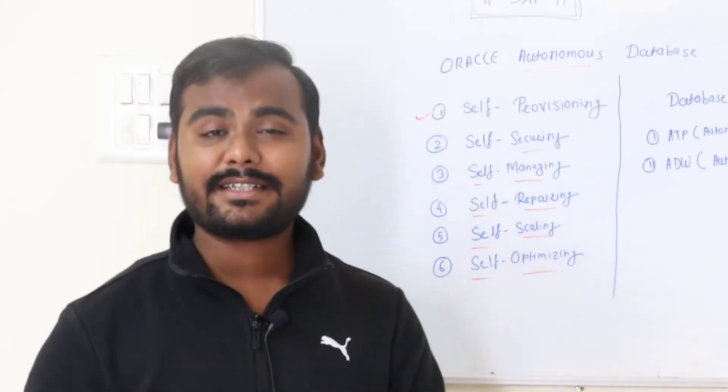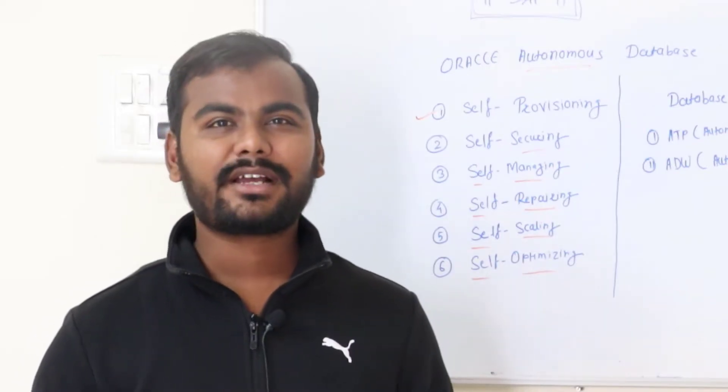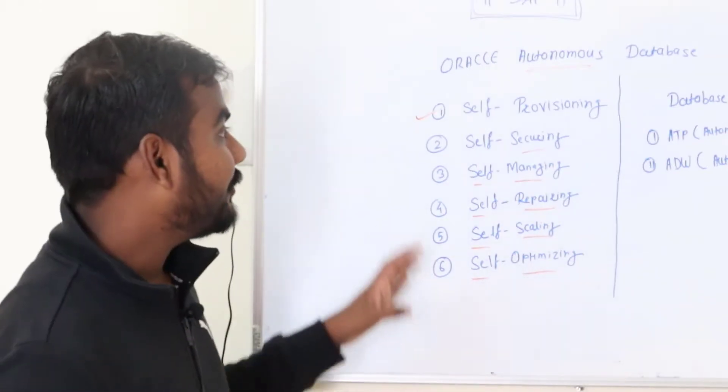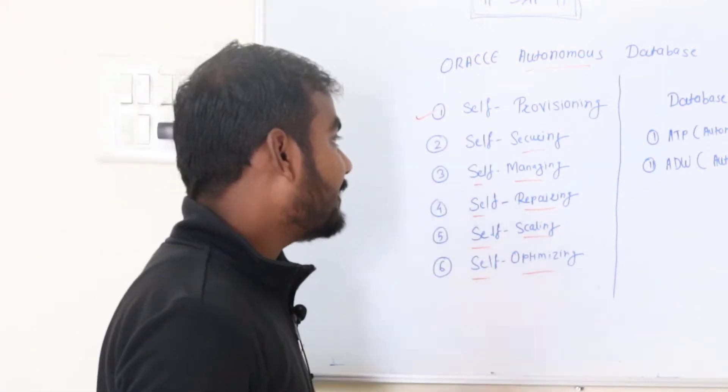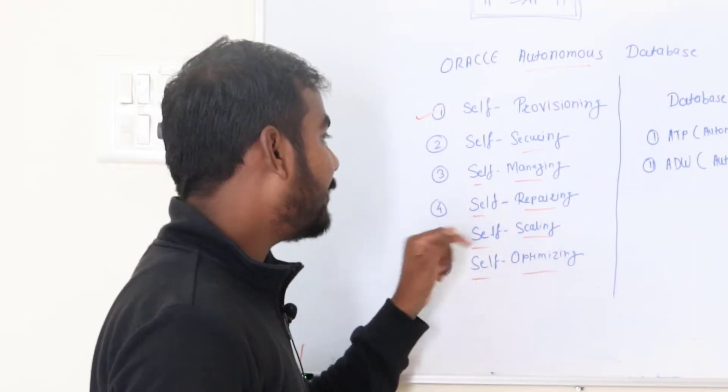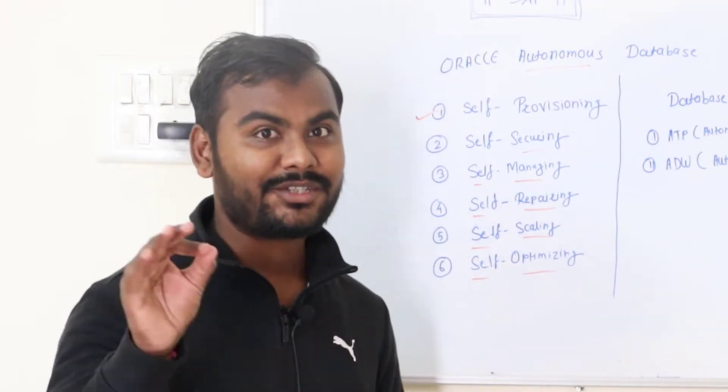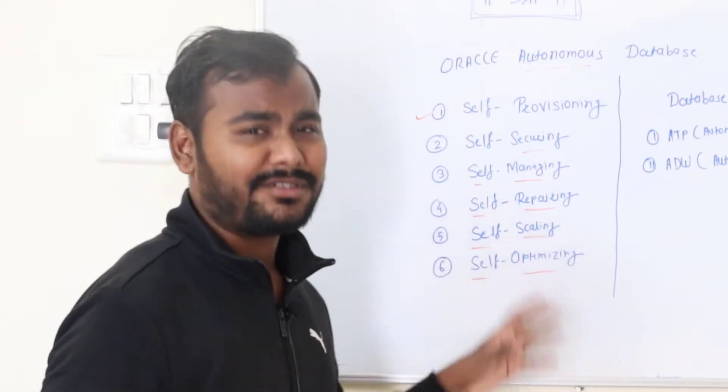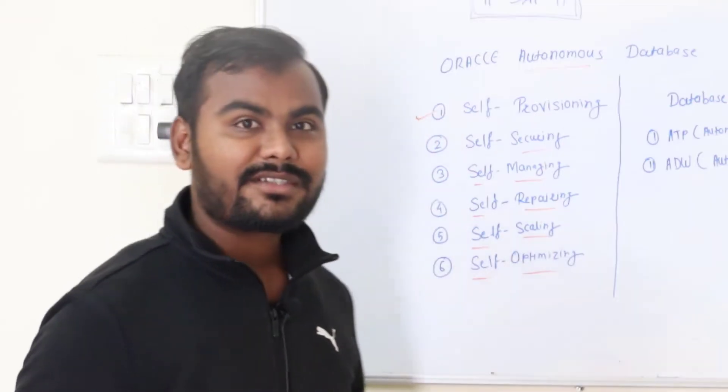Let's get started about Oracle Autonomous Database. If I'm telling you the features of Oracle Autonomous Database, you can see it is self-provisioning, self-securing, self-managing, self-repairing, self-scaling, self-optimizing. What is common in these five or six features? The common thing is self.